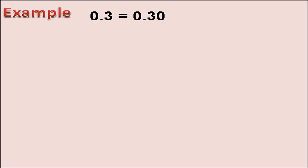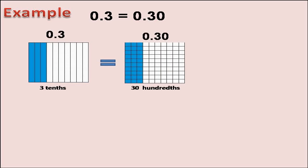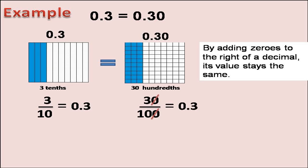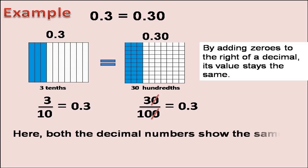For example, 0.3 is equal to 0.30. By adding zeros to the right of a decimal, its value stays the same. 0.3 can be written as 3 by 10, which equals 0.3. 0.30 can be written as 30 by 100. Here the zeros cancel out, giving us 0.3. Both decimal numbers show the same amount of space taken.